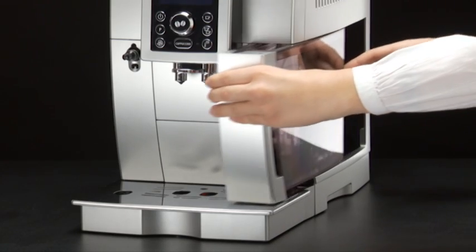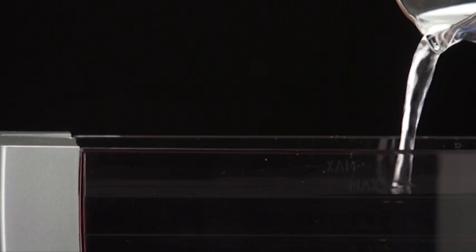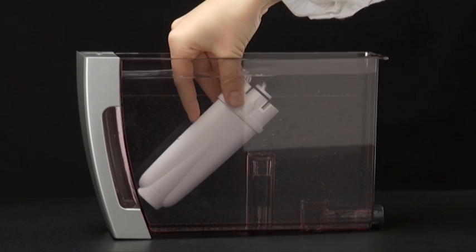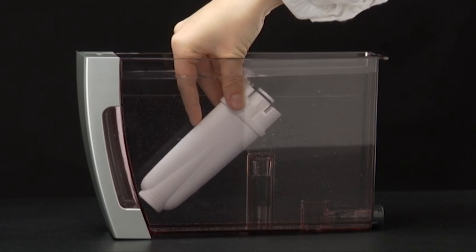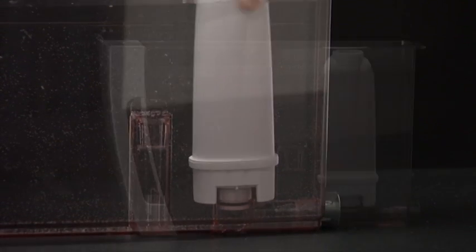Extract the tank from the appliance and fill with water. Insert the filter in the water tank and immerse it completely, sloping it to enable the air bubbles to escape. Insert the filter in the filter housing and press as far as it will go.